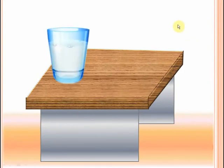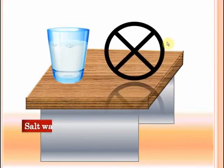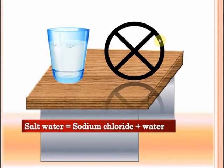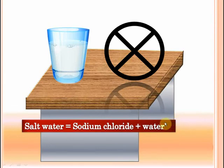Let's take another example — what do you think about salt water? It's not pure, and you can easily find out why. It contains two types of particles: sodium chloride particles and water particles. But we said that a pure substance contains only one kind of particles. Sodium chloride is pure and water is pure, but salt water is not a pure substance — it's a mixture.